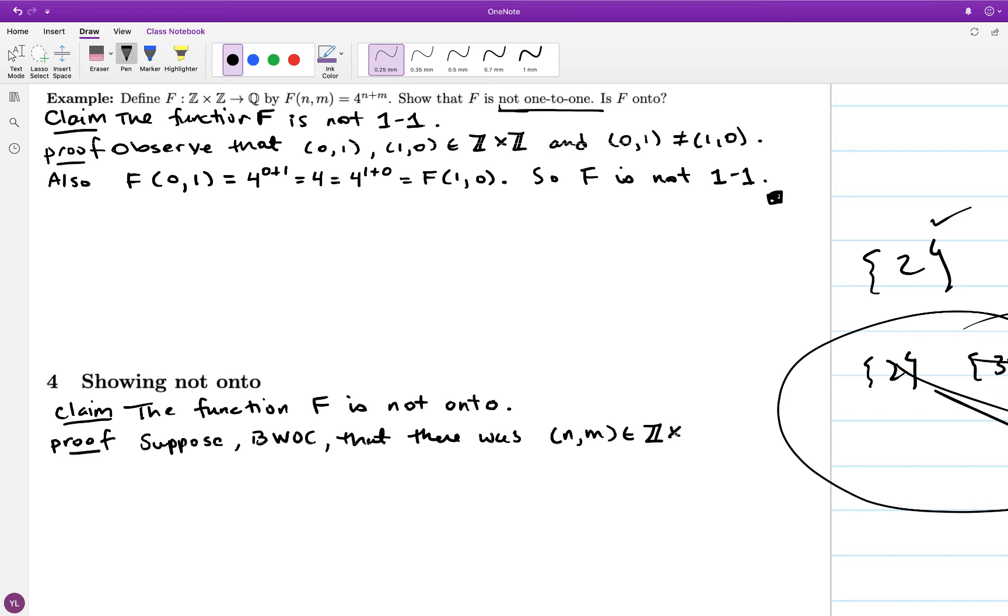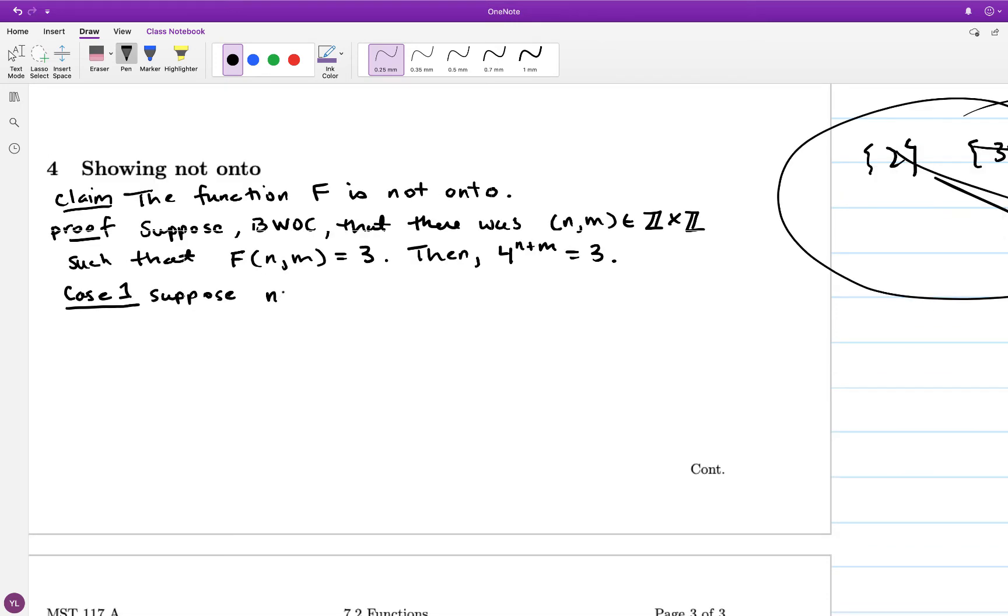So I'm going to suppose by way of contradiction that there actually was an element of the domain that did get mapped to the number 3 by the function. So I'm assuming that there is an element (n,m) such that f(n,m) is equal to 3. Then I can just play around with this equation and see what I can conclude. I'm hoping for a contradiction.